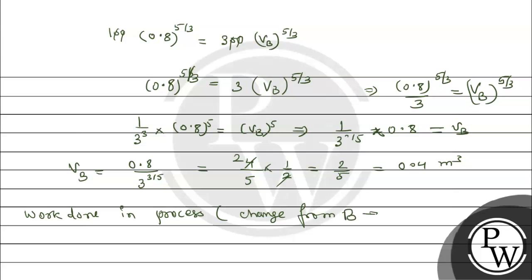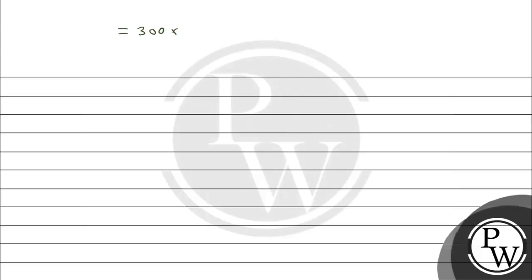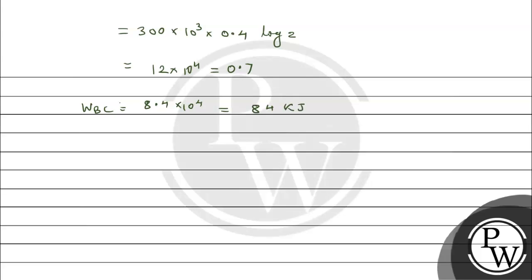Now we calculate work done for B to C (isothermal): WBC = PB·VB·log(final volume / initial volume). Putting in the values: 300 × 10^3 × VB = 300 × 10^3 × 0.4, and log value is given as 0.7. Finally we get 12 × 10^4 × 0.7, so WBC = 8.4 × 10^4 = 84 kilojoules.